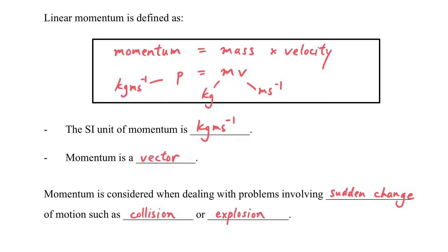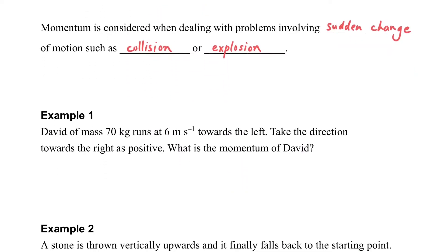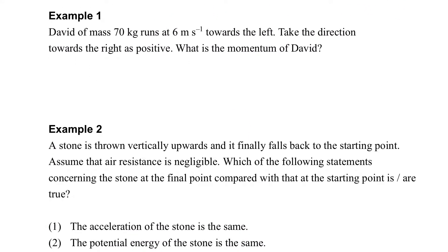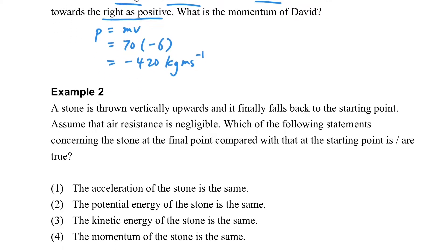Let's consider some examples in order to consolidate our idea about momentum. Example 1 is very straightforward. We have a person with particular mass and particular speed. What is the momentum of this person? By p equals m times v, then we can get the momentum directly. But we have to ensure the direction is correct.